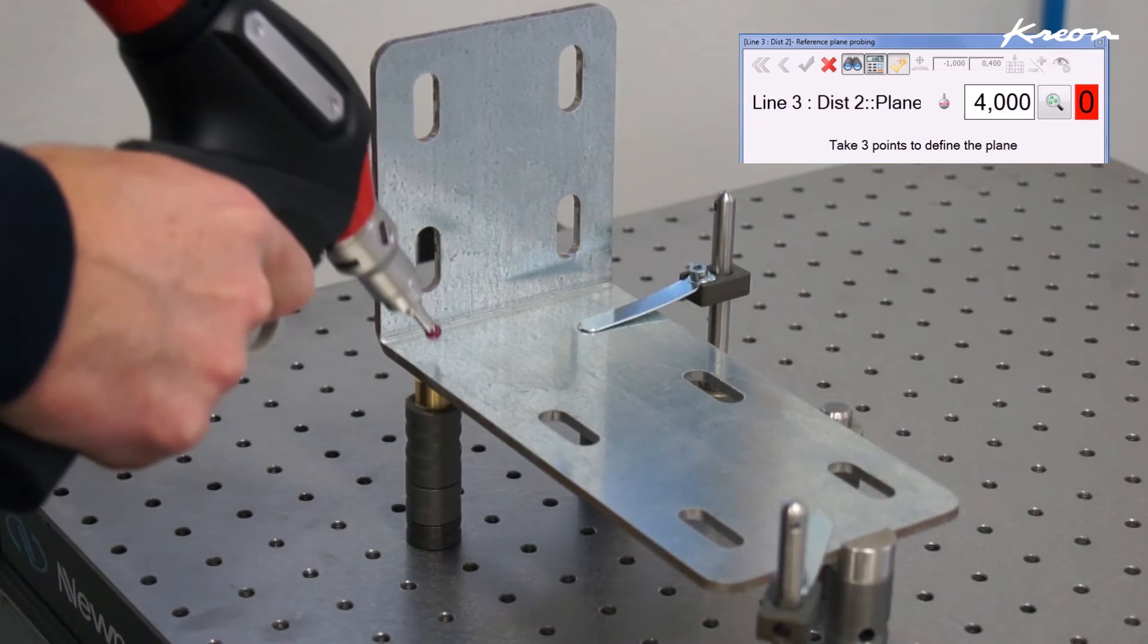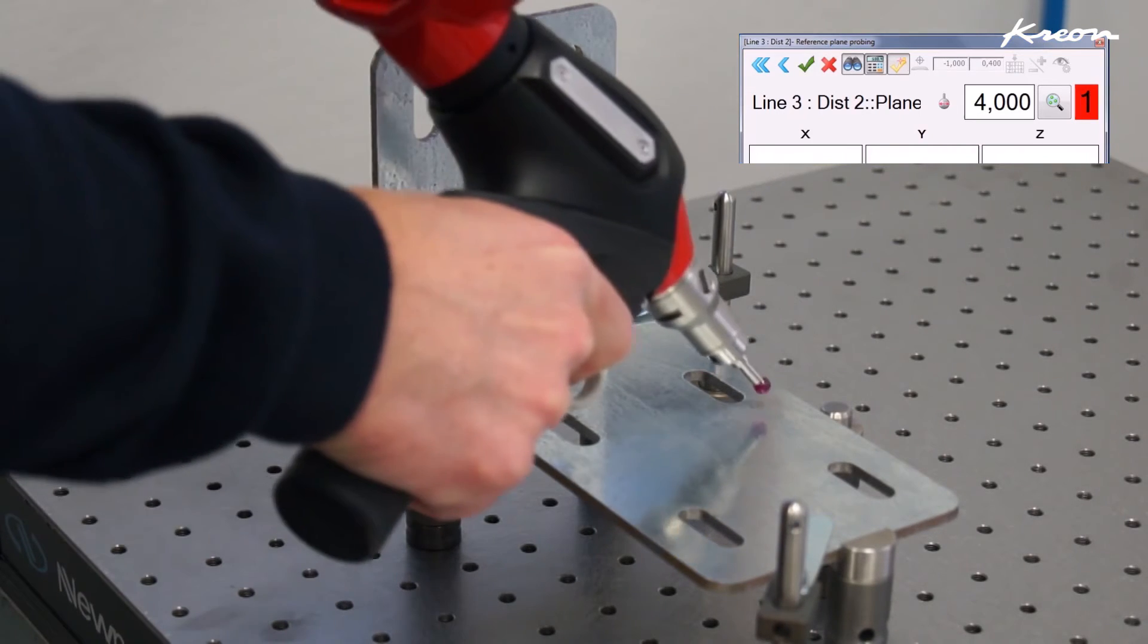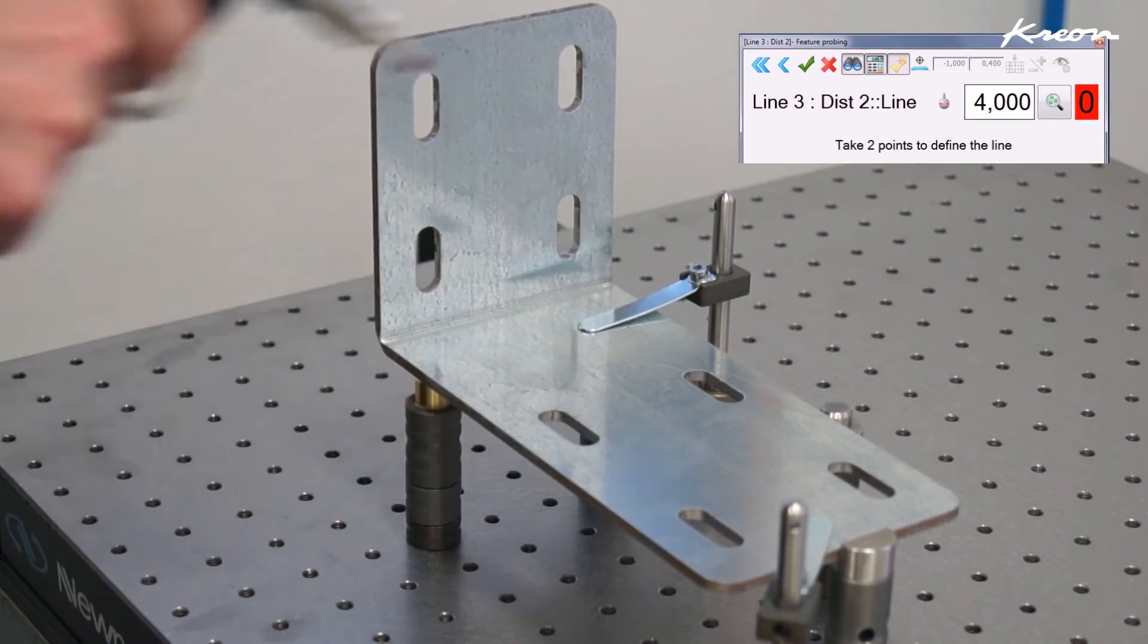Now we will measure the distance between two edges using the line to point function. We first define a plane to project the line and the point.